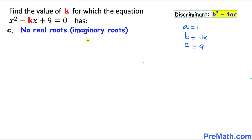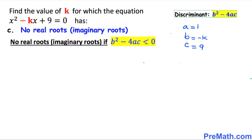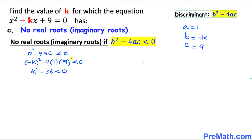In this part, we have to find the value of k where the quadratic equation has no real roots. No real roots means imaginary roots. In this case the discriminant must be less than 0. So: b squared minus 4ac is less than 0. Substituting: negative k squared minus 4 times 1 times 9 is less than 0, which becomes k squared minus 36 is less than 0, giving us k squared is less than 36.